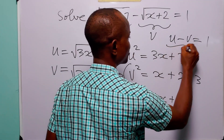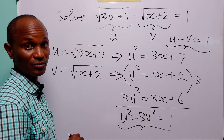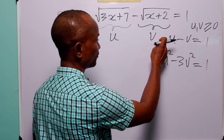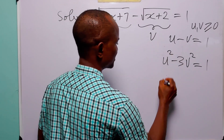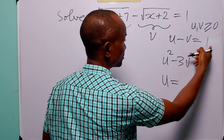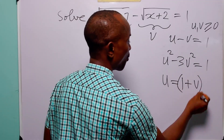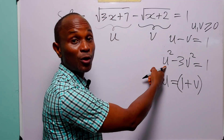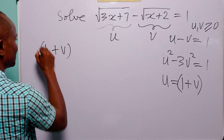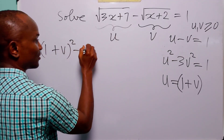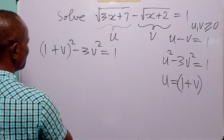Now we have a system of equations which we can very easily solve by substitution. From the first equation, u minus v equals 1, we have that u is equal to 1 plus v. So let us substitute 1 plus v for u in the second equation. When we do that, we have (1 plus v) squared minus 3v squared is equal to 1.